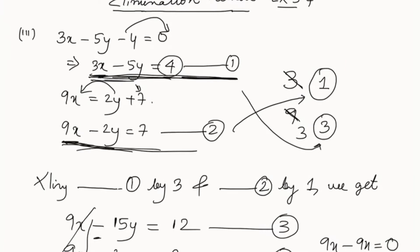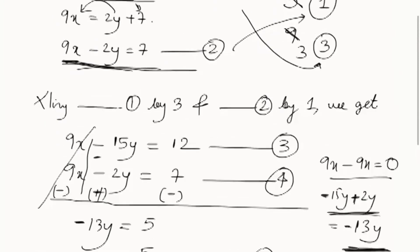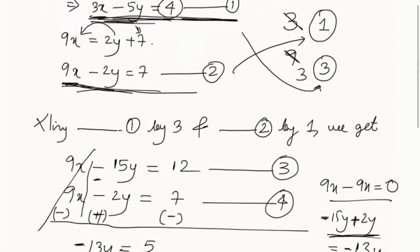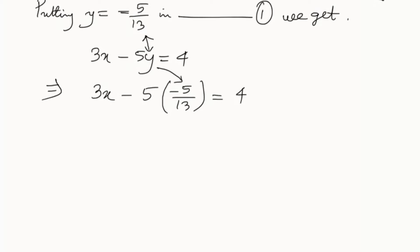Now we substitute y equals minus 5 by 13 back into equation 1, which is the simpler equation: 3x minus 5y equals 4. Replacing y: 3x minus 5 times (minus 5 by 13) equals 4. There's a minus here and a minus here, so minus times minus is plus — giving us 3x plus 25 by 13 equals 4.